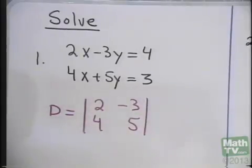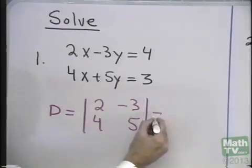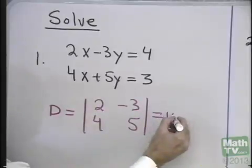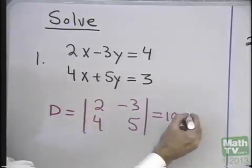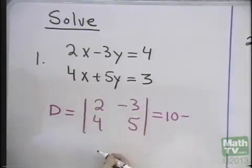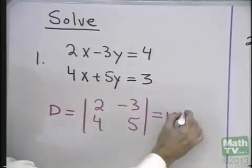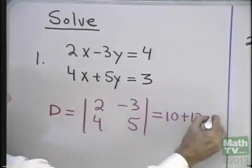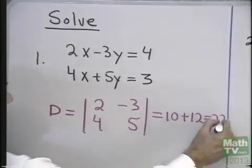That determinant is easy to evaluate. That's going to be 2 times 5, which is 10, subtract 4 times negative 3, which is negative 12. So 10 plus 12, which is 22.